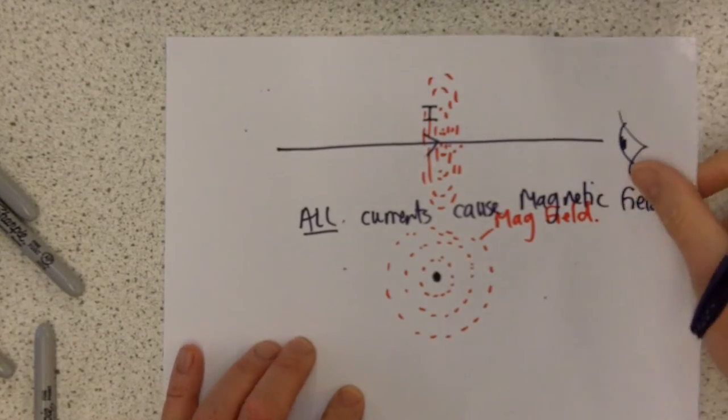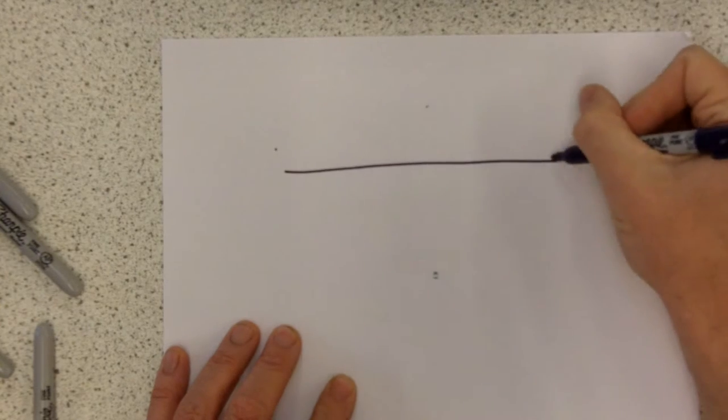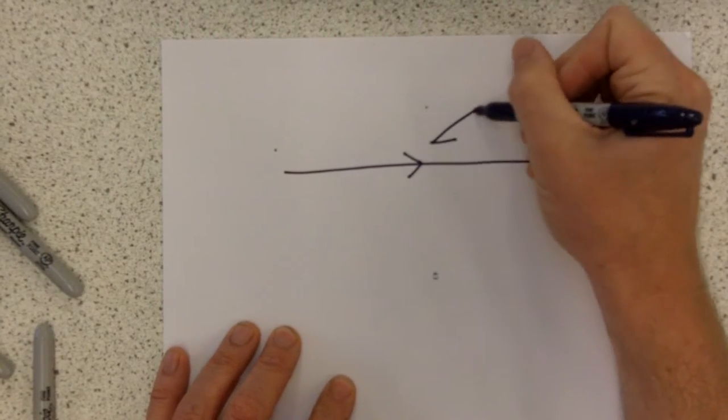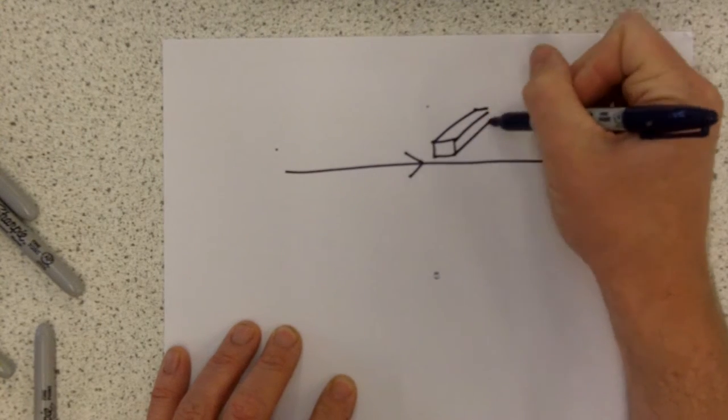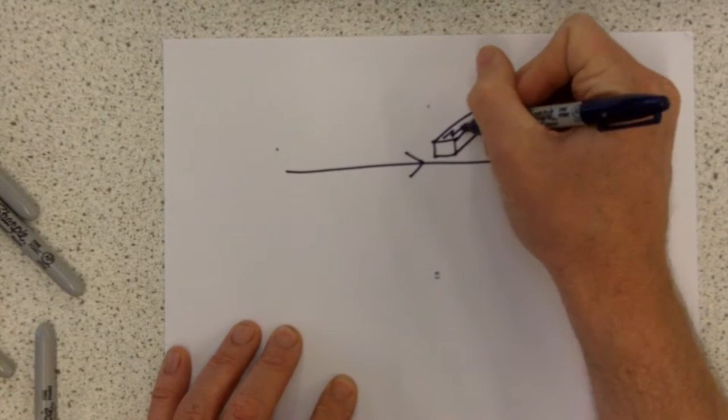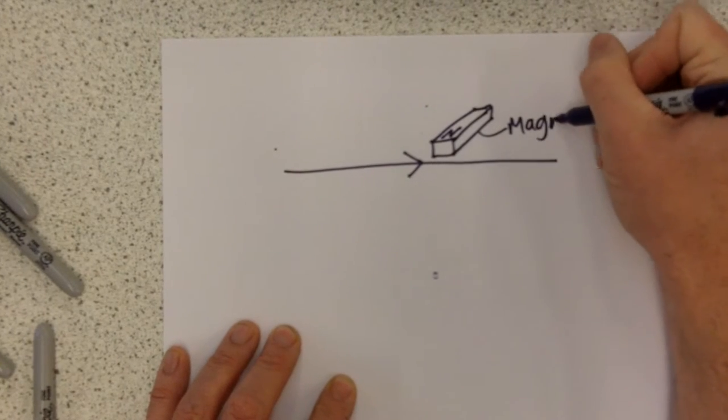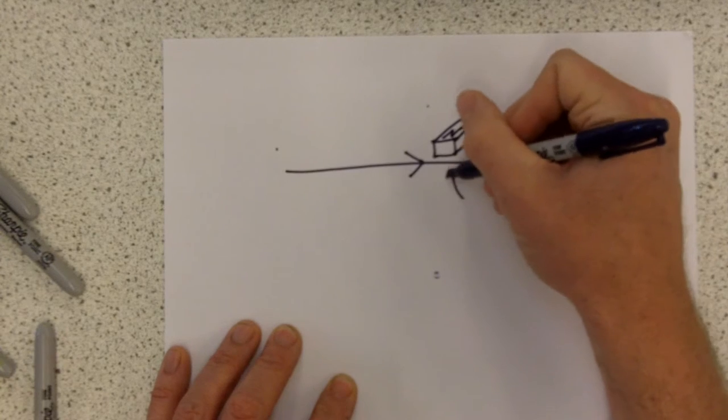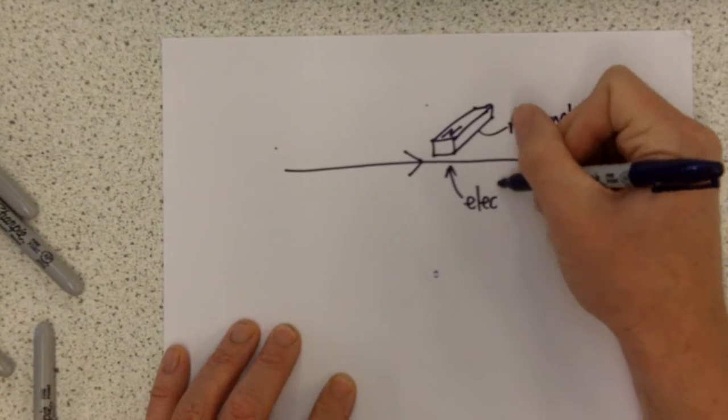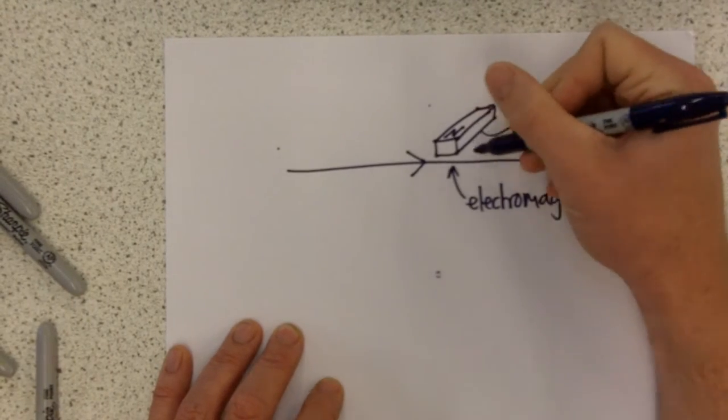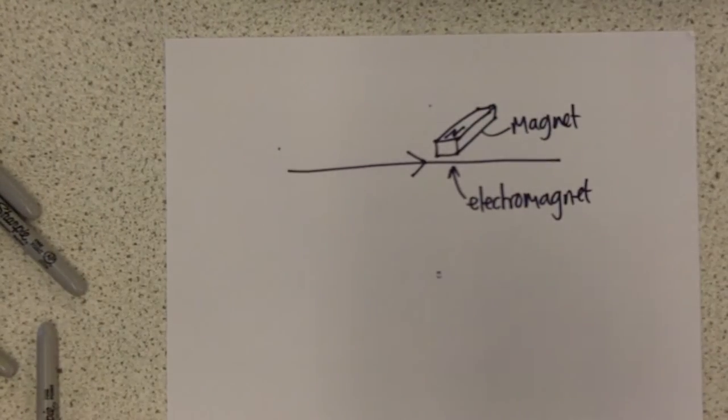So what that means is if you have a conductor with a current passing through it and you bring a magnet near to that, then what you've got is a permanent magnet and essentially an electromagnet. Now you know that when you have two magnets near to each other they can attract or repel, and so that's what happens when you have a magnet near a current.